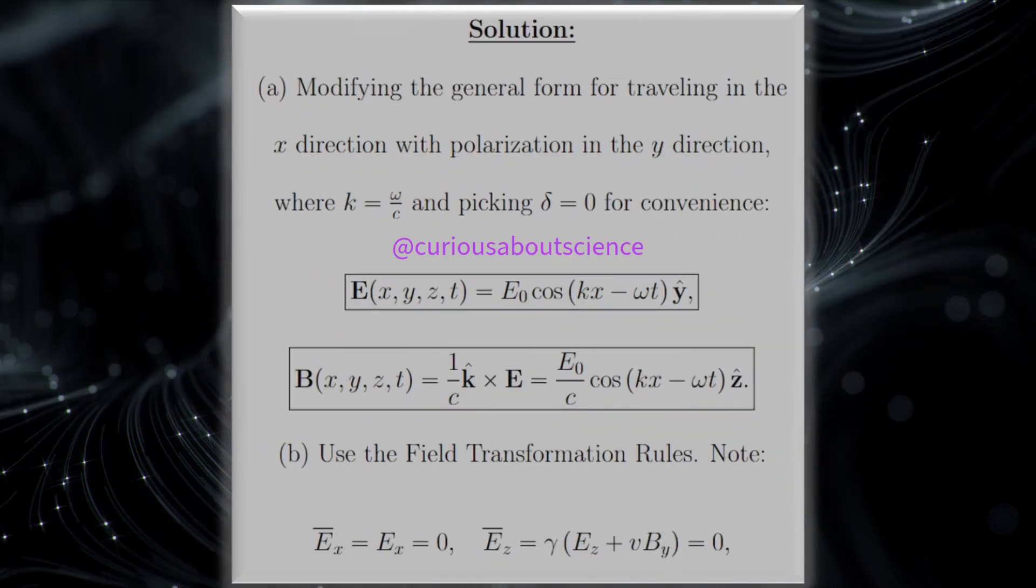Alright. So, for part A, we're modifying the general form of traveling in the x direction with polarization in the y direction, where k, the wave number, is omega over C, and picking delta equals 0 for convenience, we get this familiar form. Again, this is something we've kind of seen before. No big deal. This is kind of what we expect to see. This is the real part of the complex exponential. So, everything is coming back from chapter 9 now.